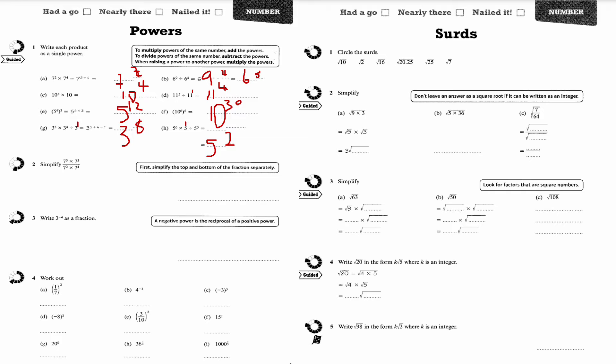This is question number 2. Simplify 7 to the 5 times 7 to the cube. I'm going to add the powers on the top of the numerator, so I get 7 to the 8 divided by 7 to the 6. 8 take away 6 is 2, so the answer is 7 squared.